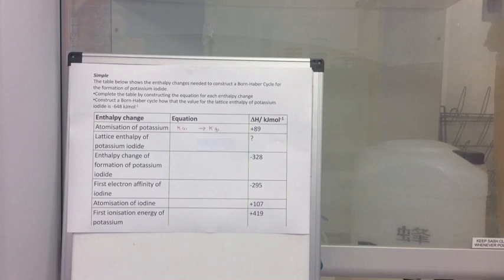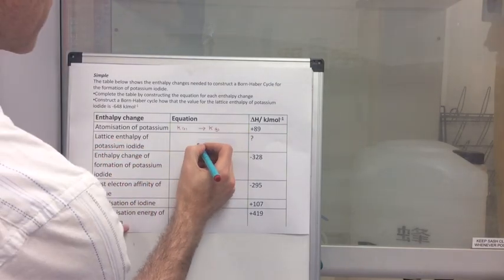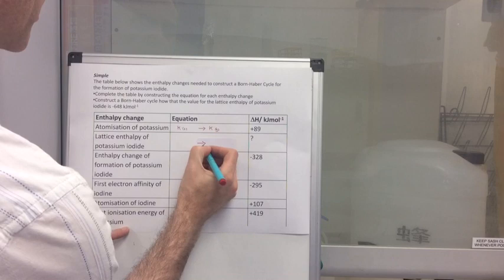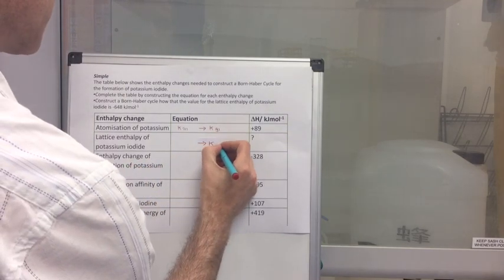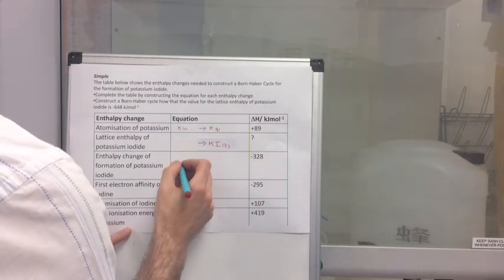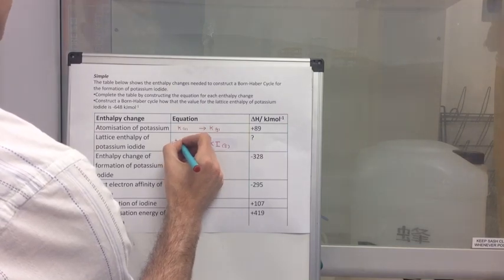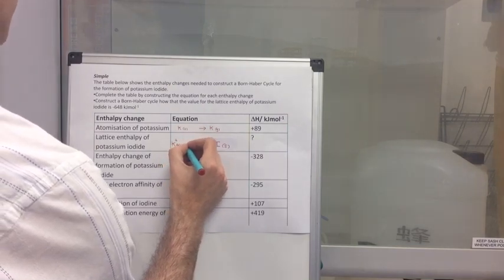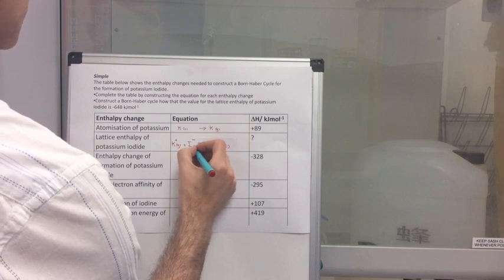The next one is the lattice enthalpy of potassium iodide. Lattice enthalpy is the enthalpy change when one mole of a solid ionic lattice, so that's KI solid, is formed from its gaseous ions. So it will be K+ gas plus I- gas.